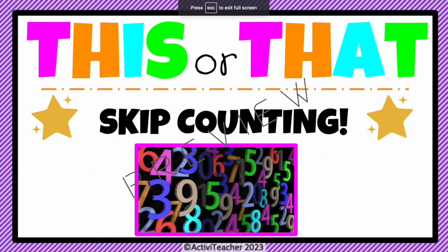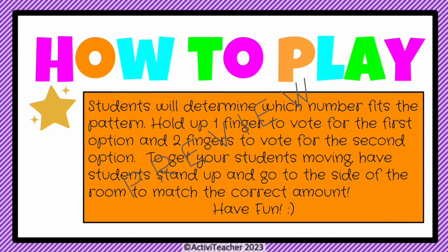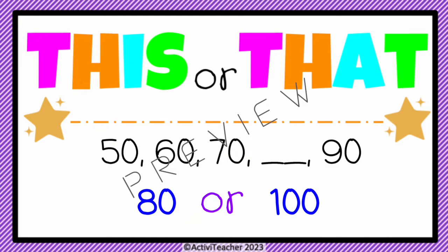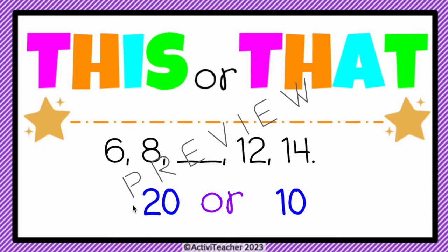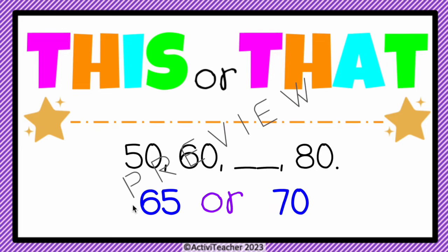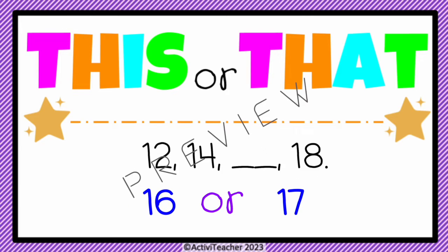I have two activities left. This one is a 'This or That' skip counting game where students get up and move by going to the side of the room that matches the correct answer. For example, the sequence shows 50, 60, 70 — and 80 goes on that side, so students move to that side of the room.